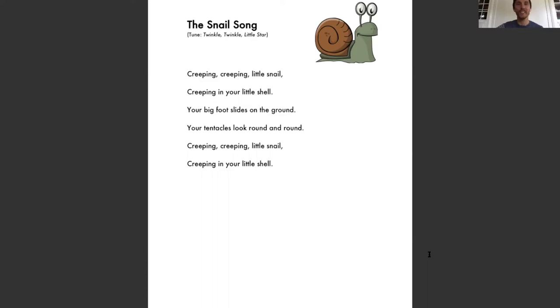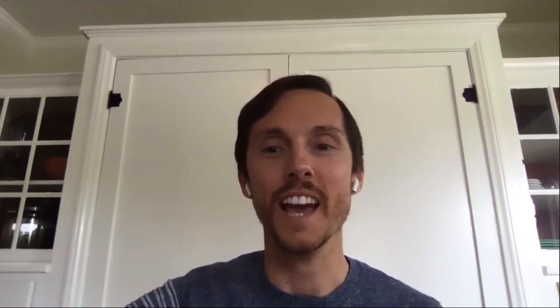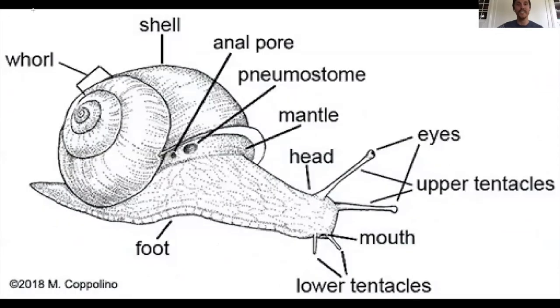I hope you liked that song. I want to also share with you a snail anatomy chart — a snail anatomy picture that I have. This is a snail's body. You can see toward the bottom, these things that stick off of its head — these are called tentacles. And this long bottom part that's usually very slimy is called the snail's foot.